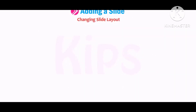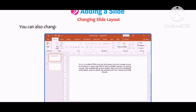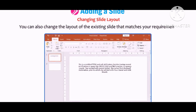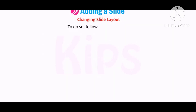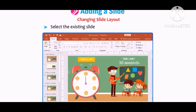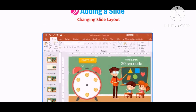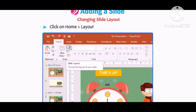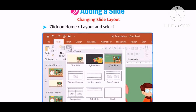Changing slide layout. You can also change the layout of an existing slide to match your requirement. To do so, follow the given steps: Select the existing slide in the Slides navigation pane. Click on Home, then go to Layout, and then select the required layout.